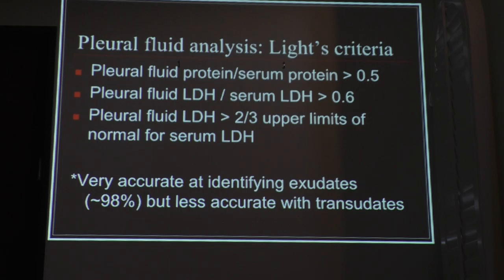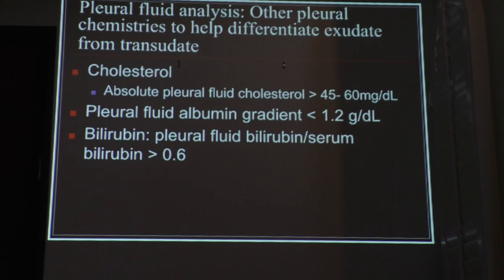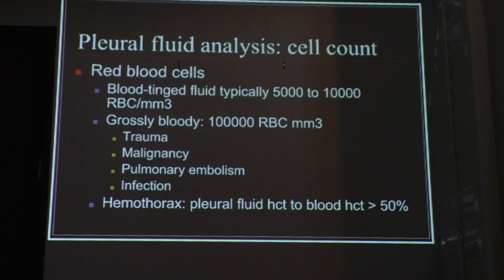Make sure you memorize the slide because you're going to need it. Other things that you send, like cholesterol — when you actually do the equivalent of SAAG in the acidic fluid, we do the pleural fluid albumin gradient just to rule out an acidic effusion. You can also send the analysis for bilirubin.